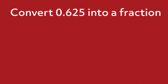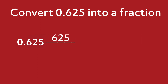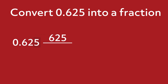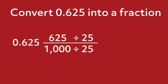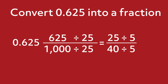Now that you've tried this one yourself, let's go over it together. First, write the numbers after the decimal point, 625, as the numerator. Next, look at the place value of the last digit 5. Since 5 is in the thousandths place, write 1,000 as the denominator of the fraction — 625 over 1,000. The final step is to simplify. Since 625 and 1,000 share a common factor of 25, we can simplify the fraction by dividing both the numerator and denominator by 25. 625 divided by 25 over 1,000 divided by 25 is equal to 25 over 40. Since 25 and 40 share a common factor of 5, divide again by 5. 25 divided by 5 over 40 divided by 5 equals 5 over 8. Great job.